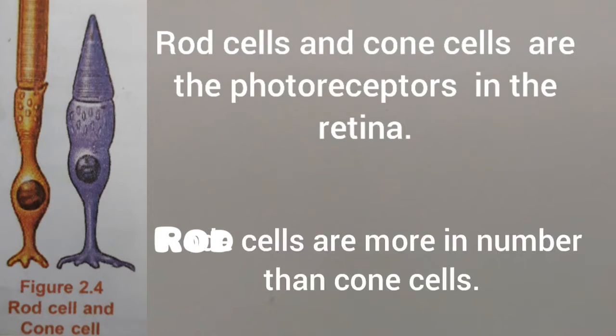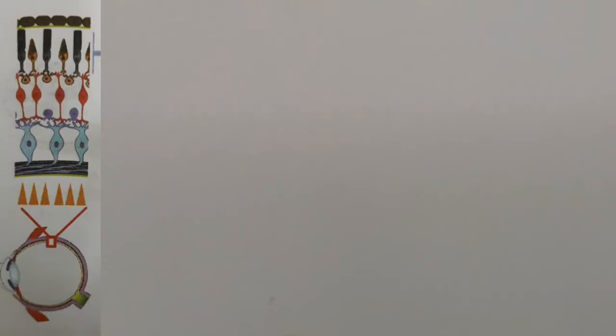Rod cells are more in number than cone cells. We have already studied retina and the retina has three layers.